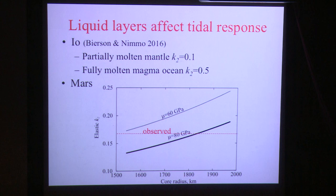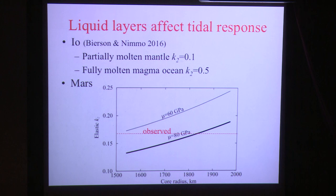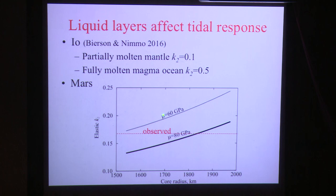Another example is Mars. The liquid core increases K2 — as you make the core bigger, you're replacing rigid mantle material with liquid that has no rigidity, so the tidal response increases. But there's a tradeoff because you don't know how rigid the mantle is. A stiffer mantle counteracts the effect of the core. These two estimates of Martian mantle rigidity show that a weaker mantle also gives a bigger tidal response. With luck, the InSight mission will help break this tradeoff.